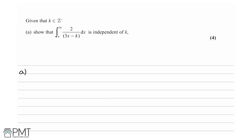We are told, given that k is in a set of positive integers, show that the integral of 2 over 3x minus k with respect to x from k to 3k is independent of k. The first point I want to pick out is when it says independent of k — what we need to show is there is no k term or variable in our answer.